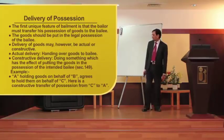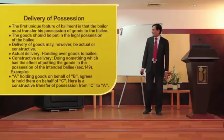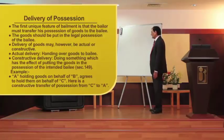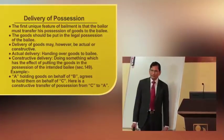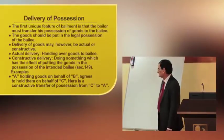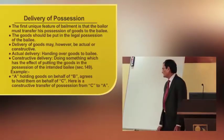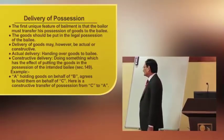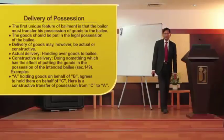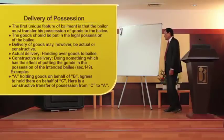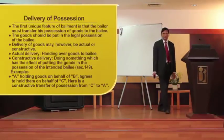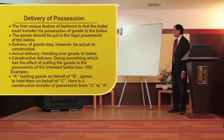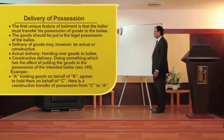For example, A is holding goods on behalf of B, and now wishes to hold them on behalf of C. Here there is a constructive transfer of possession from B to C through A. Originally A was holding the goods on behalf of B; now he is holding the same goods on behalf of C. So here there is constructive delivery.